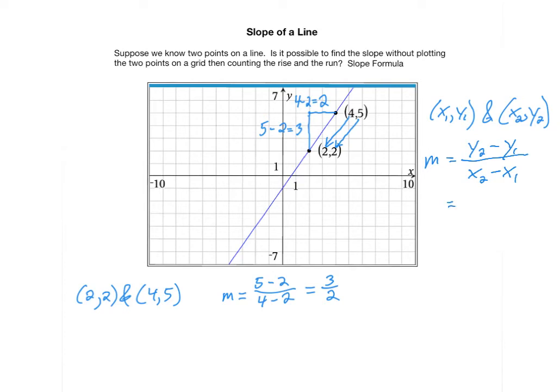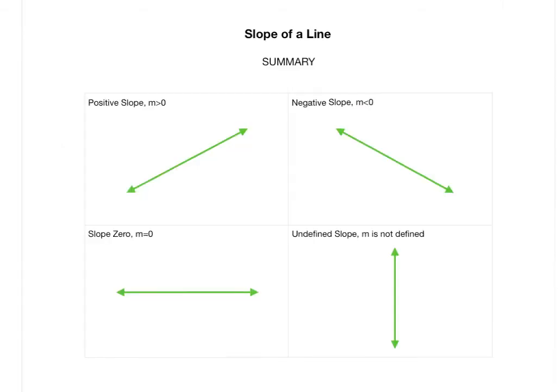This could also be thought of this way. You could do y1 minus y2 over x1 minus x2. These two formulas give you the exact same computation. You don't need to do the computations twice. Either way is fine. We've now got a slope formula. m is equal to y2 minus y1 over x2 minus x1, or it could be y1 minus y2 over x1 minus x2.